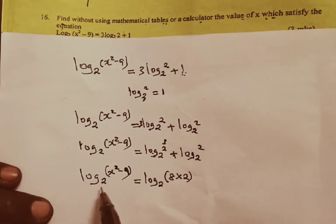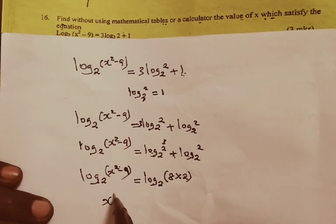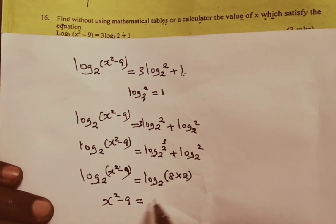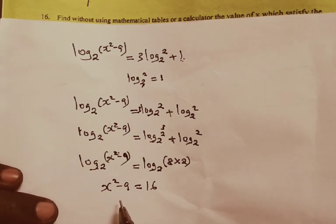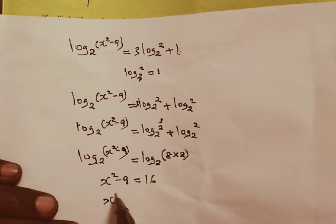From there now, we drop log base 2 because it is common on both sides, and we equate the powers. We are going to have x squared minus 9, being equal to 8 times 2 will give us 16. And we will collect the like terms.